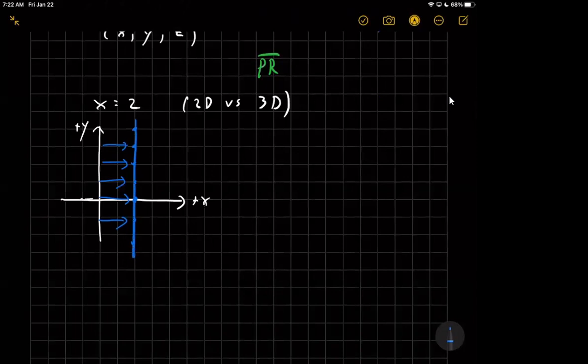If I said y equals 2, it would be a horizontal line, two units above the x-axis. It would be two units in the y-direction.